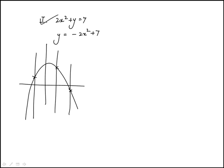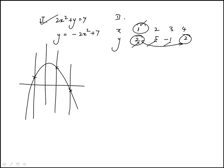So choice one is a function. For choice two, we're given table values with inputs 1, 2, 3, and 4, and different values for y. Even though two of the y-values are the same, this is still a function because the range can have duplicate values — what you can't have is two different y-values for the same domain value. So this also passes the vertical line test, giving a unique x for each input. Choice two is also a function.